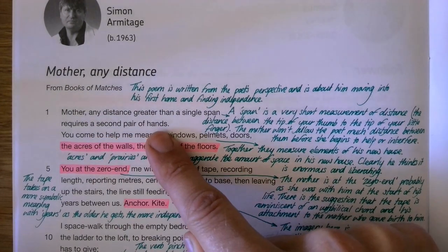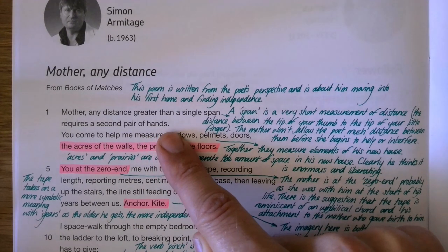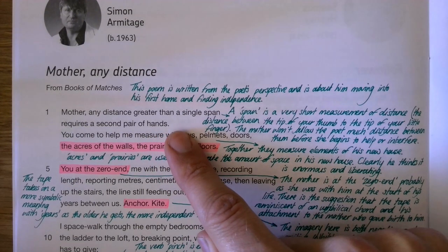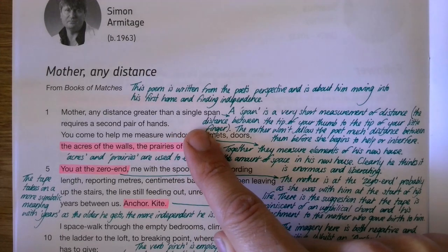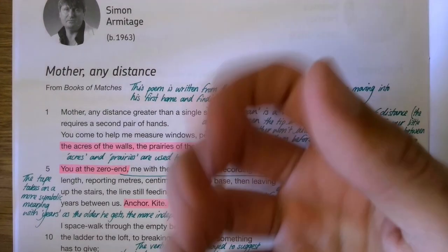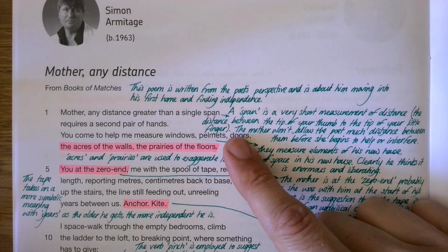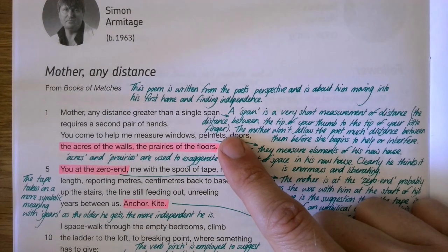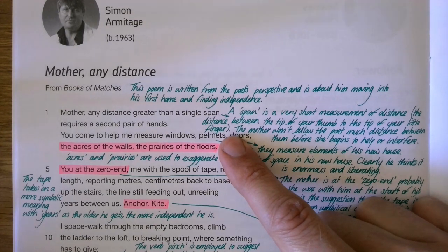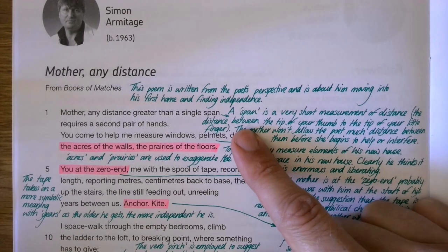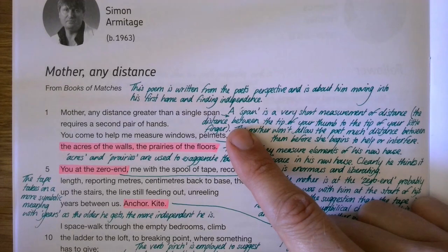So to start off, what he says: Mother any distance greater than a single span requires a second pair of hands. A span is a very small measurement, only the distance between your little finger and the tip of your thumb, just over 20 centimeters. What he's suggesting here is that he can't get very far from his mother before she tries to intervene or help. So he's not very independent, and this poem is all about him growing a little bit more independent of his mother.